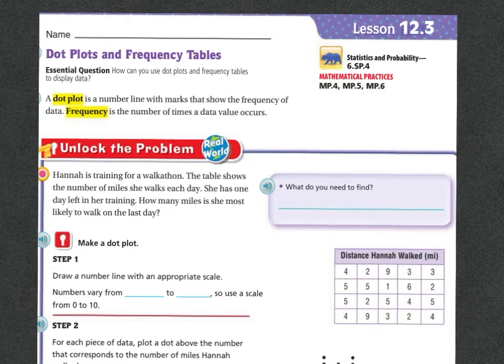Let's unlock the problem. Hannah is training for a walk-a-thon. The table shows the number of miles she walks each day. She has one day left in her training. How many miles is she most likely to walk on the last day? What do I need to find out often?